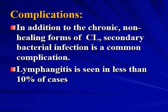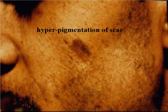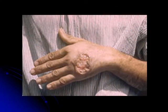Complications include the chronic non-healing forms — diffuse and recidivant leishmaniasis — as well as secondary bacterial infection, which is a common complication. Lymphangitis is seen in less than 10% of cases. Pictures show the oriental sore in southwest Asia and north Africa: a dry lesion, urban type, anthroponotic type, with dogs as possible reservoir hosts, and rarely recidivant. Healing leaves hyperpigmented scars.